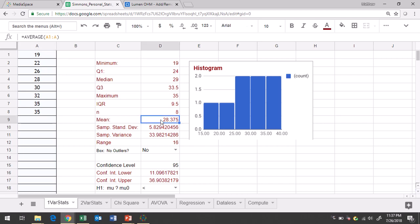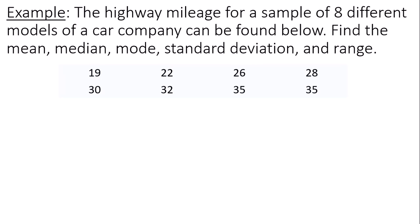The mean is 28.38, the median is 29. We'll find the mode just by looking at the data values in a moment. The standard deviation is 5.83, and then the range is actually going to be 16.